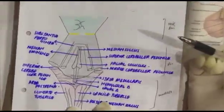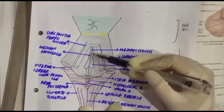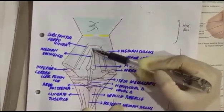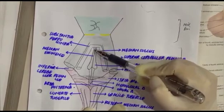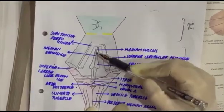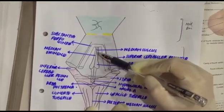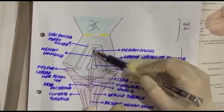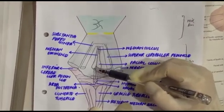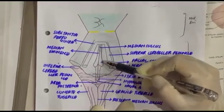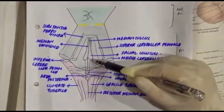Moving on to the details: in the center, we have the median sulcus. If we move laterally to the median sulcus, this is the median eminence — we have median eminence on both sides. Tracing the median eminence inferiorly, this swelling is known as the facial colliculus.